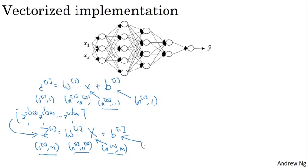Now the final detail is that b1 is still n1 by 1, but when you take this and add it to b, then through Python broadcasting, this will get duplicated into an n1 by m matrix, and then add it element-wise.